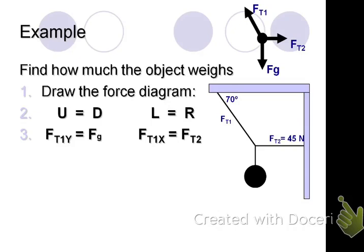Now, step number four, plug in any known values. Do we know any of these values? We do know FT2. What's FT2? Let's plug it in. So if FT2 is 45, look what I just learned. Now I know that FT1x is also 45.